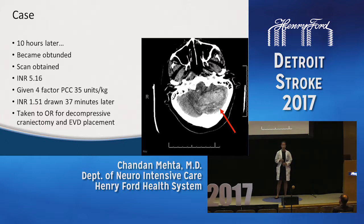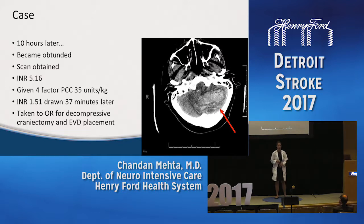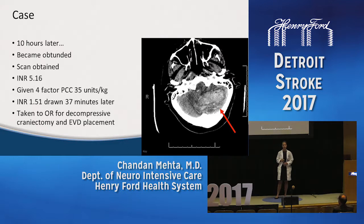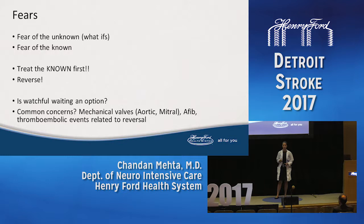Fast forward 10 hours later — this gentleman became obtunded, required intubation, and we sent him for a CT scan. The hemorrhage had expanded rapidly to a very large size. His INR at that time was 5.16. The decision was made to give him four-factor PCC at 35 units per kg. His INR 37 minutes later was 1.51, and he ultimately required a decompressive craniectomy and EVD placement.